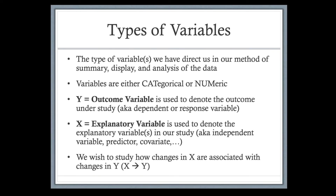A quick reminder: the type of variables we have are important, as they help us decide which summaries are appropriate, which graphical displays are appropriate, and which methods of analysis are available. Variables are either categorical — placing people into categories such as biological sex, country of birth, exposed or not, diseased or not — or numeric, such as height, weight, and age. The variable denoted Y is our outcome or dependent variable; X indicates the explanatory, independent, or predictor variable.